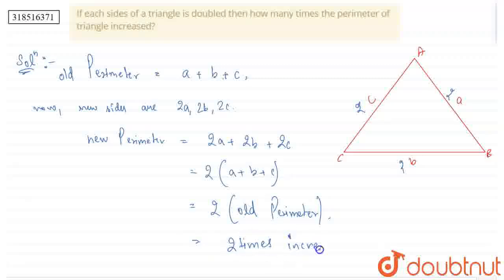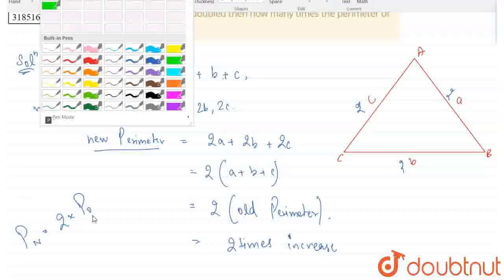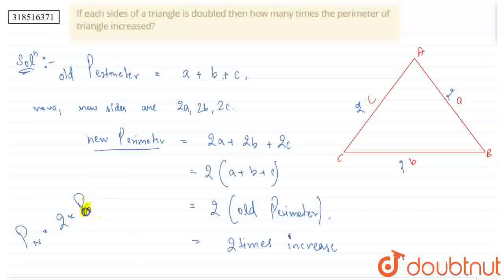The perimeter increases 2 times. New perimeter equals 2 times old perimeter. P_new equals 2 times P_old. This is our answer - 2 times. This is a basic question we have solved and we have got the answer.